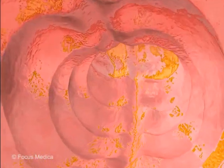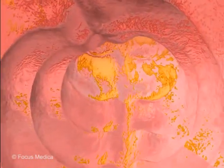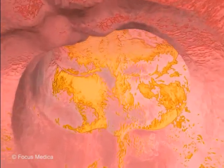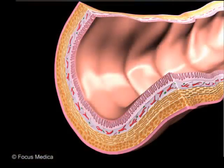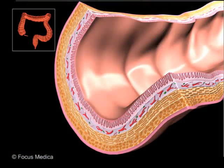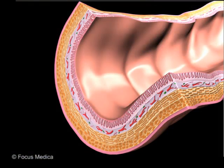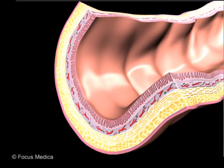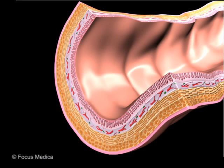Ulcerative colitis is a type of IBD that characteristically affects the mucosa of the large intestine and rectum, rarely involving the submucosa, muscle layer, and serosa.